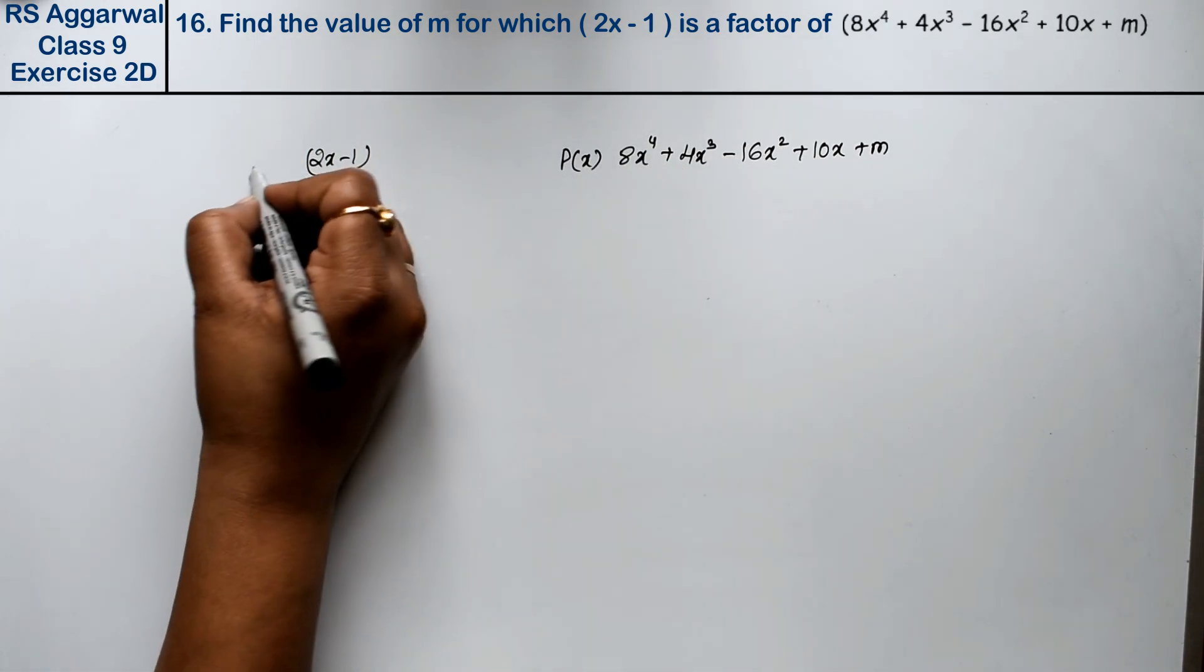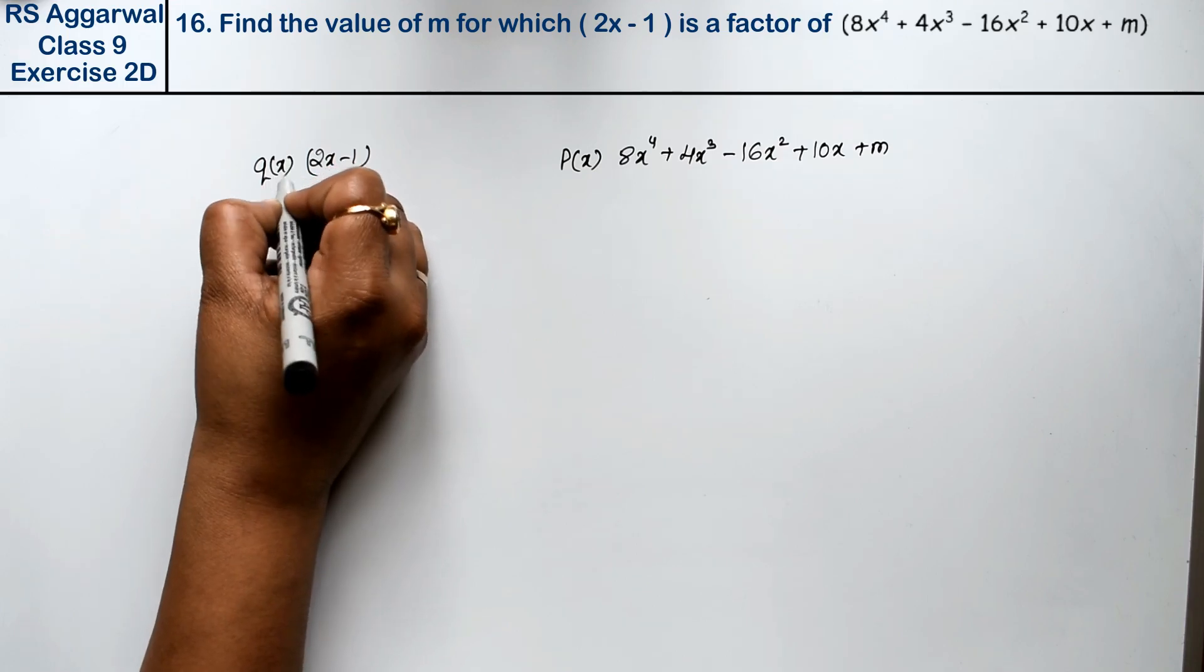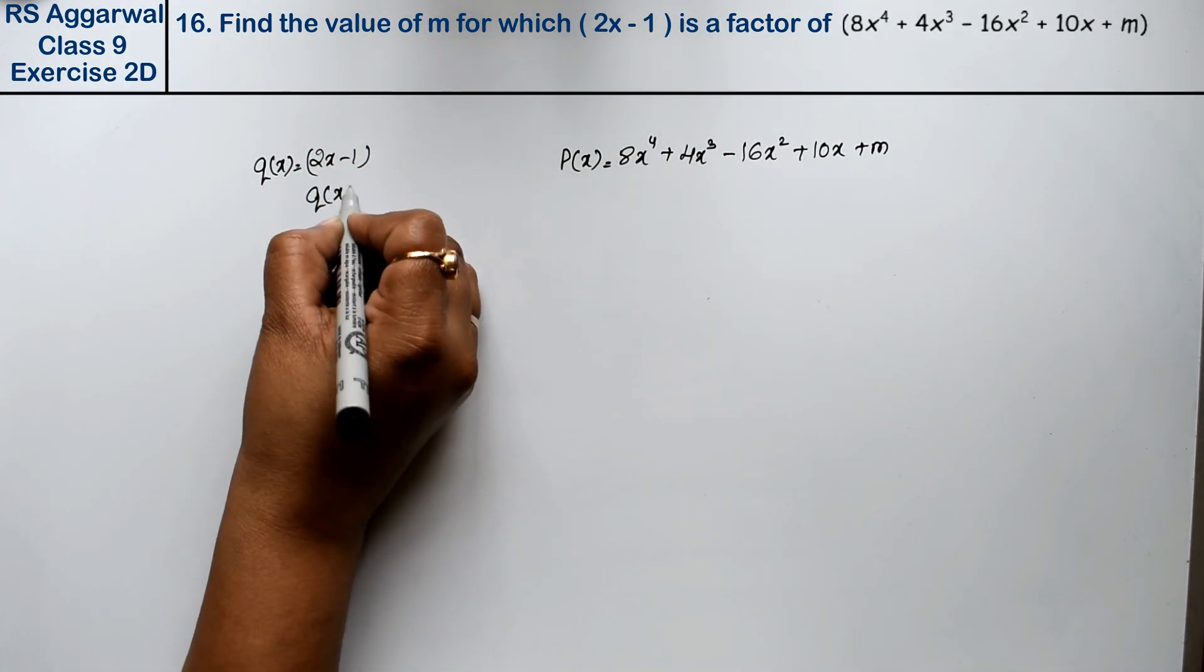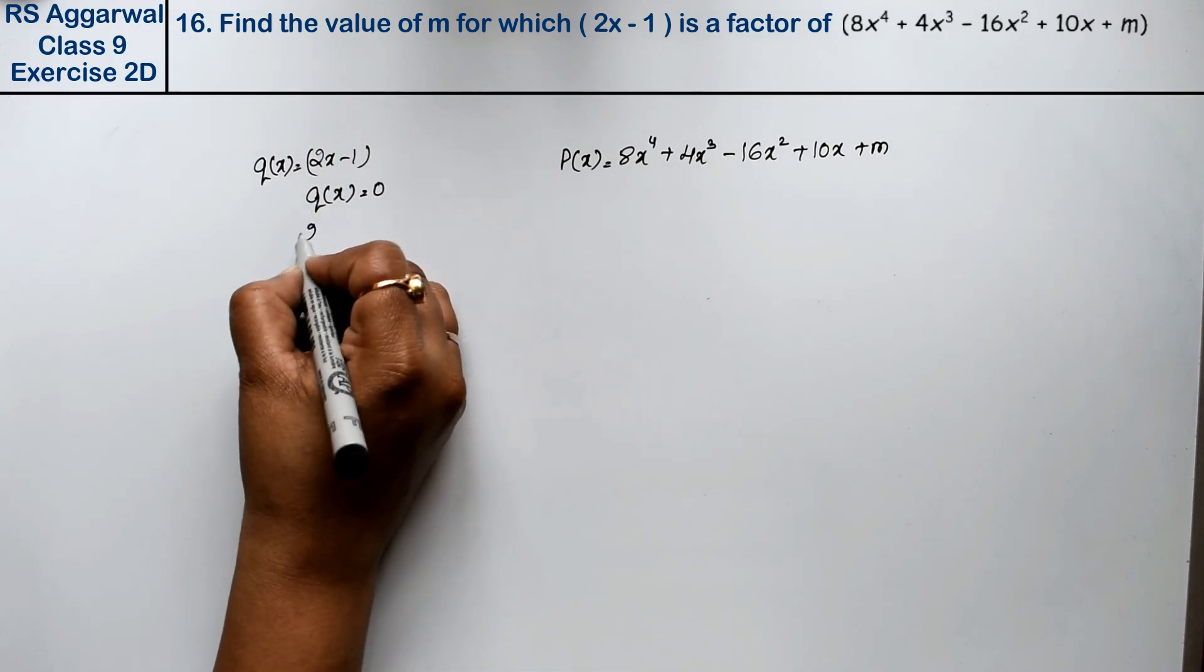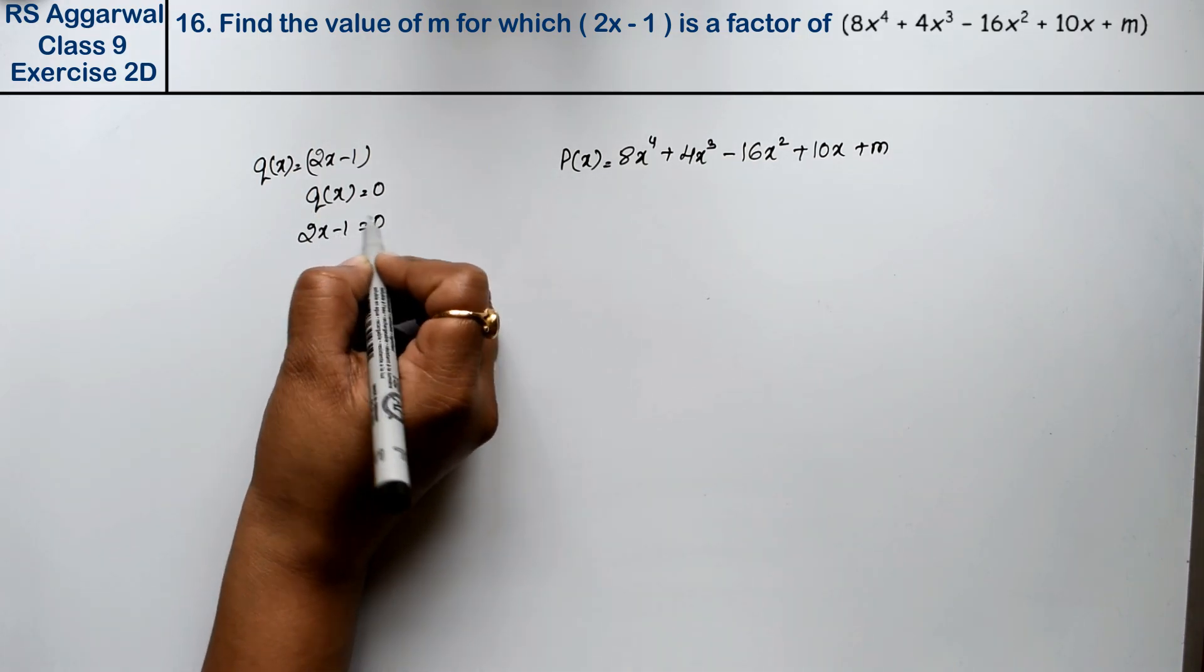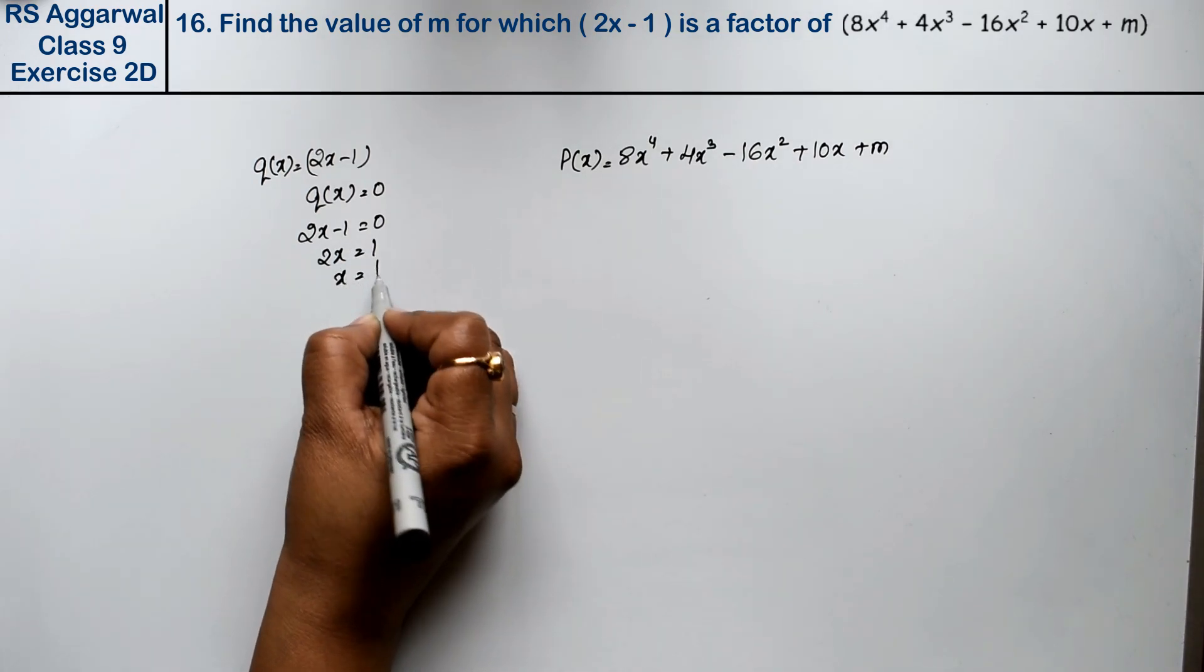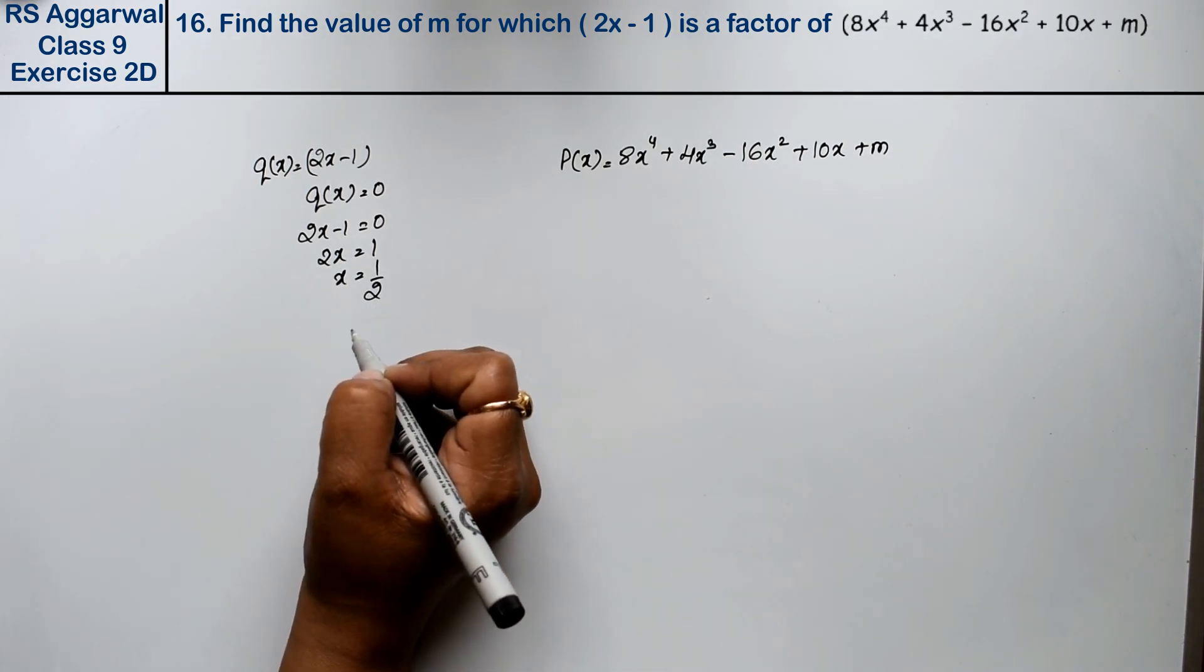So we assume this is P(x) and this is Q(x). Now, according to factor theorem, we set Q(x) equal to zero. Here I get 2x minus 1 equals to 0, so 2x equals to 1, and x equals 1 upon 2.